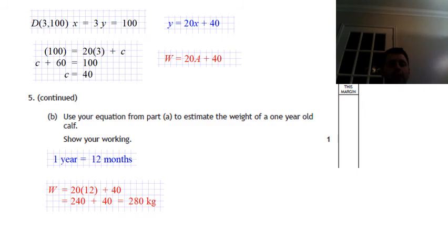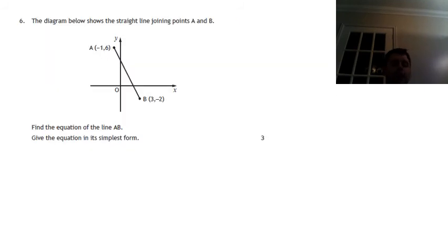Again this one. Find the equation of a line AB. Again, same type of procedure. We know y equals mx plus c. Find the gradient. We have to write down our two points. There's our two points.